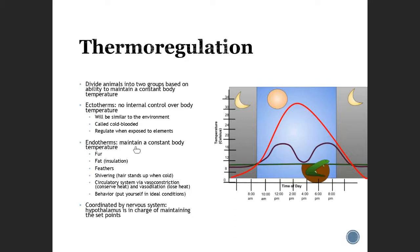We are endotherms, so we're able to maintain a constant body temperature. There are different ways we do this: via fur, fat layers, feathers, the process of shivering, and the circulatory system through vasoconstriction and vasodilation. Plain behavior also helps — you put yourself in ideal conditions; if it's too hot and you're sweating, you go indoors or find shade. Ultimately, this is all controlled by the nervous system, and the guy in charge is your hypothalamus, which maintains these set points.